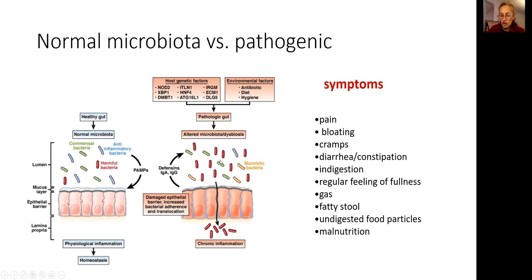This stimulation of the immune system occurs when the digestive tract is not healthy. The symptoms include pain, bloating, cramps, diarrhea, constipation, feeling of fullness, gas, fatty or foul-smelling stool — which can also occur with pancreatic insufficiency — and undigested food particles in the stool. As a result, patients can become malnourished.